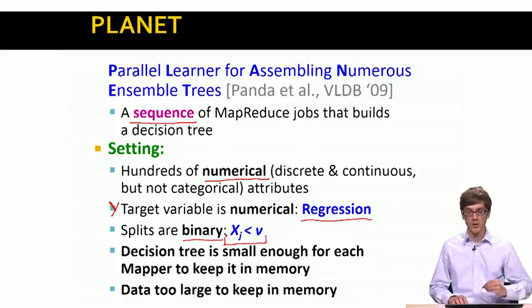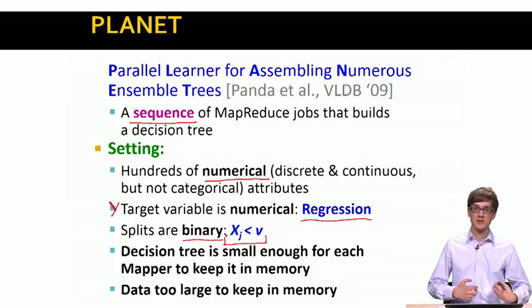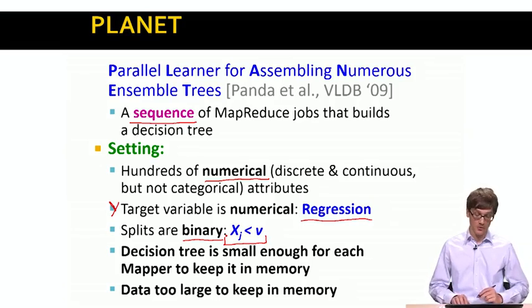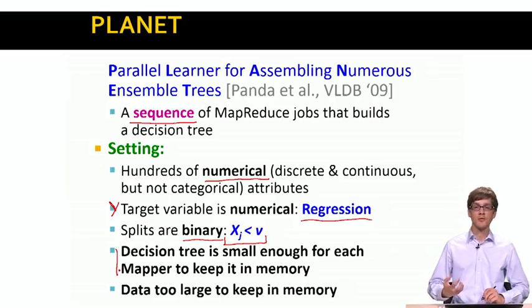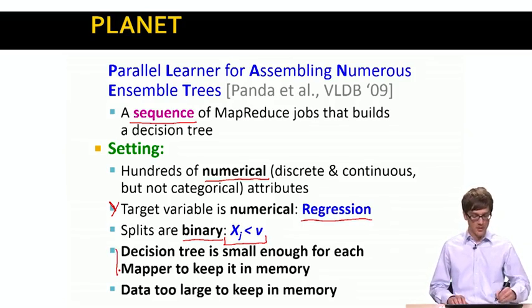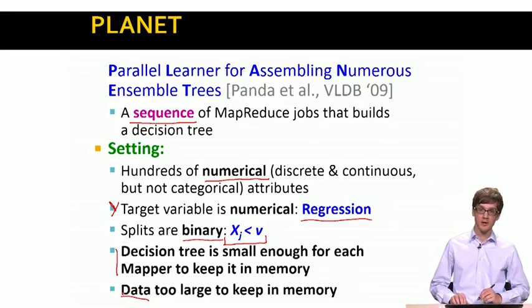And we will limit ourselves to binary splits. So our decisions will be of the form, is x less than value v? And then if yes, go to the left, if no, go to the right. As I mentioned, our decision tree is small enough, so mapper can keep it in memory, but the data is too large to be kept in memory.